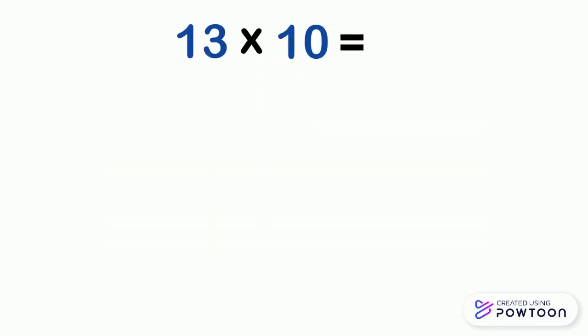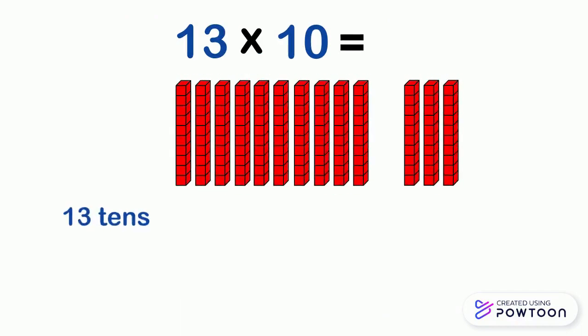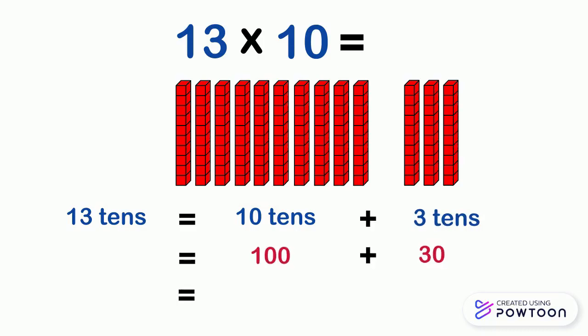Multiplying 13 by 10. 13 times 10 is 13 tenths. So it is 10 tenths plus 3 tenths. So it is 100 plus 30, which is equal to 130. So 13 times 10 equals 130.